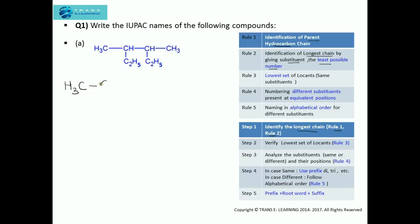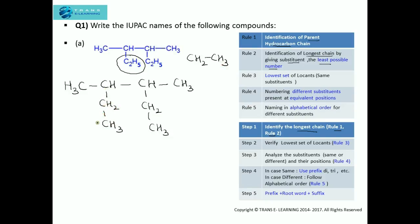To make it easy to identify the longest chain, I will write C2H5 — which is an ethyl group — as CH2 and CH3. Now for the numbering, I'll start from here: 1, 2, 3, 4, 5, 6, because this seems to be the longest possible chain giving the least possible number to the substituents.